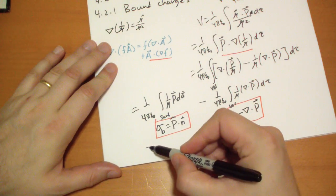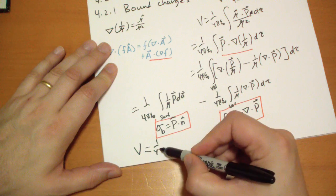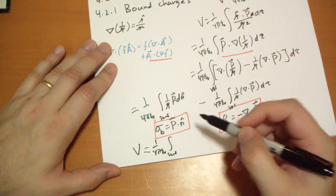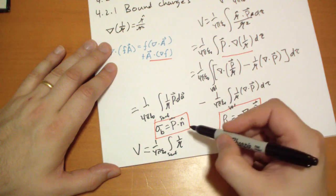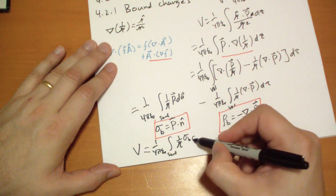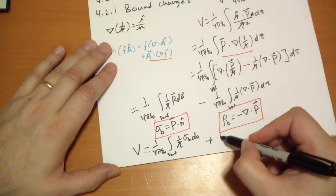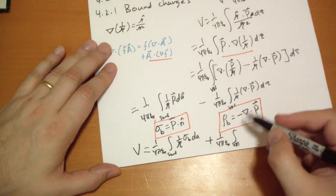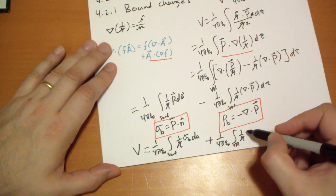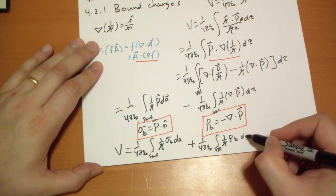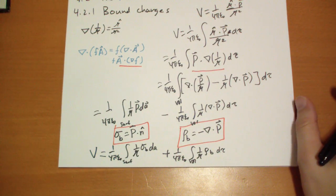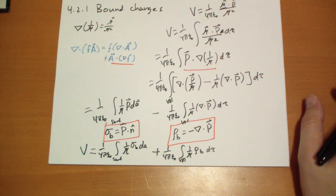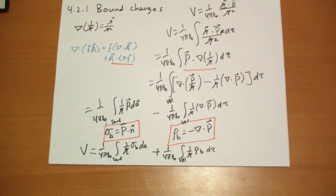Now we can rewrite the potential as 1 over 4π ε₀ times the surface integral of (1/r) σ_b dA, plus 1 over 4π ε₀ times the volume integral of (1/r) ρ_b d tau. This makes things a lot easier because now we can just think about the surface charge and the volume charge inside, and do all our calculations without working very hard.